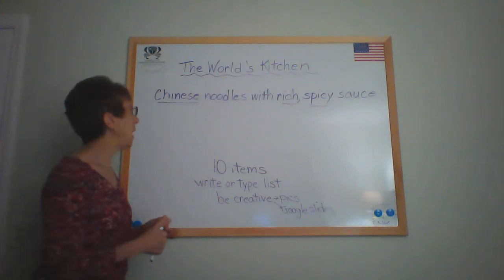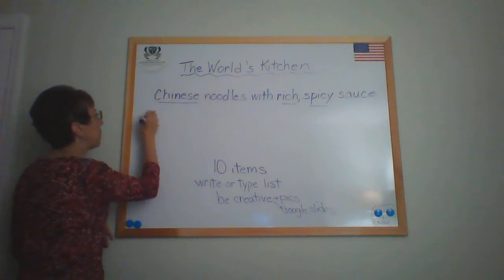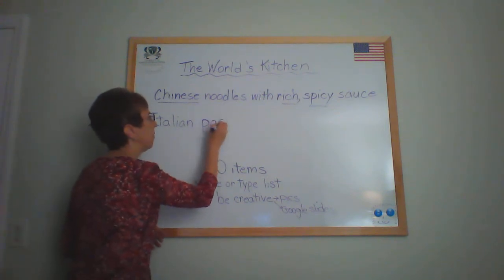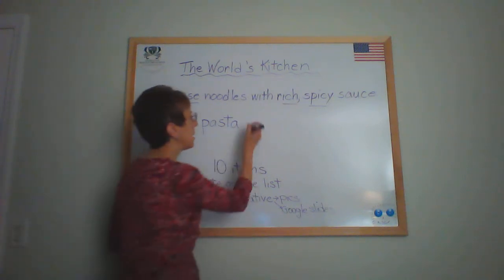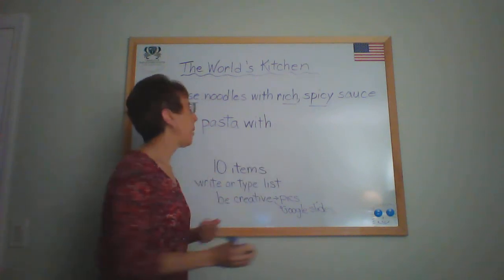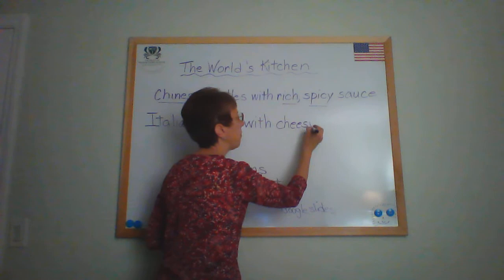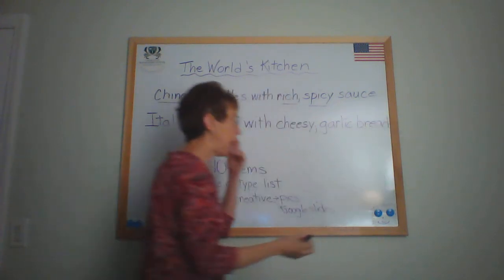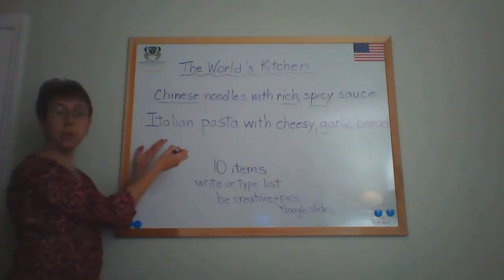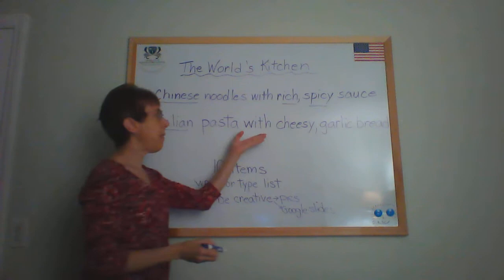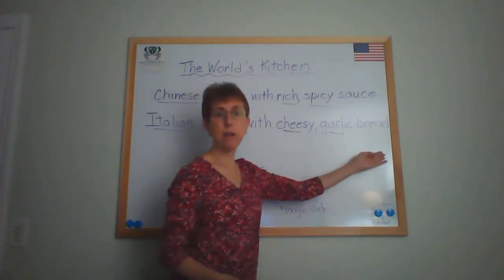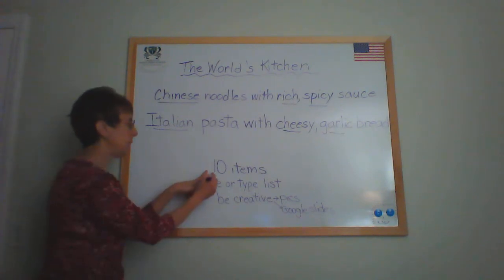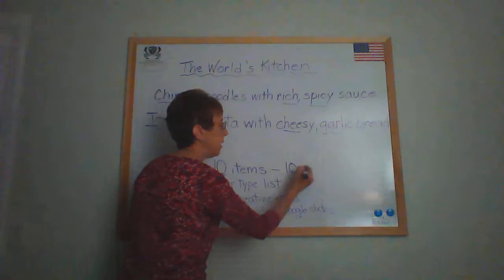Maybe you want to say something from Italy. We'll say Italian pasta with cheesy garlic bread. So now we have another country, Italy. We use the proper adjective Italian to describe the pasta, and that's going to be served with cheesy garlic bread. Cheesy and garlic describe the bread. So at least 10 items, meaning 10 different countries.